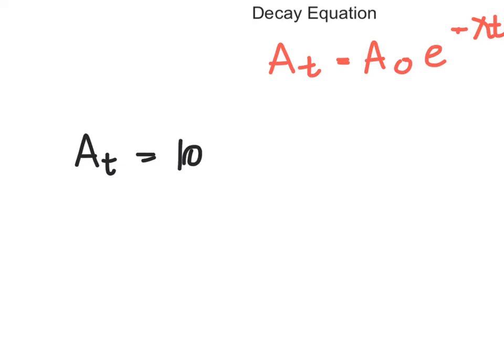you would say the original activity, say 100 millicuries, e to the minus lambda, which is 0.693 divided by the half-life, which for technetium is 6 hours.